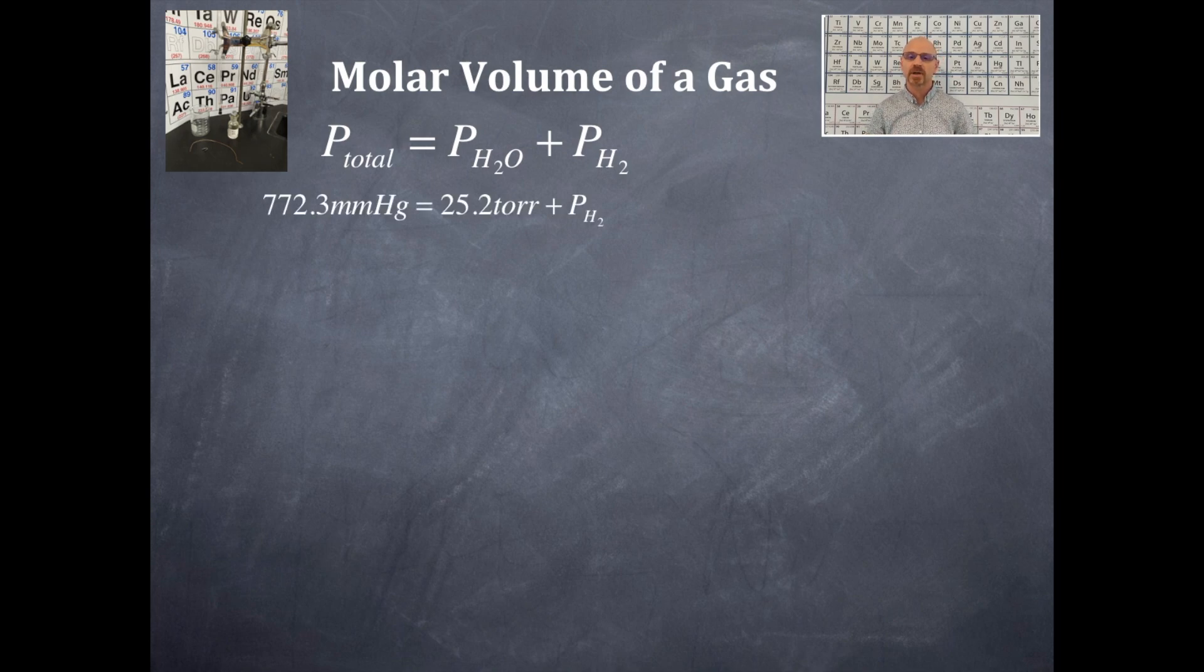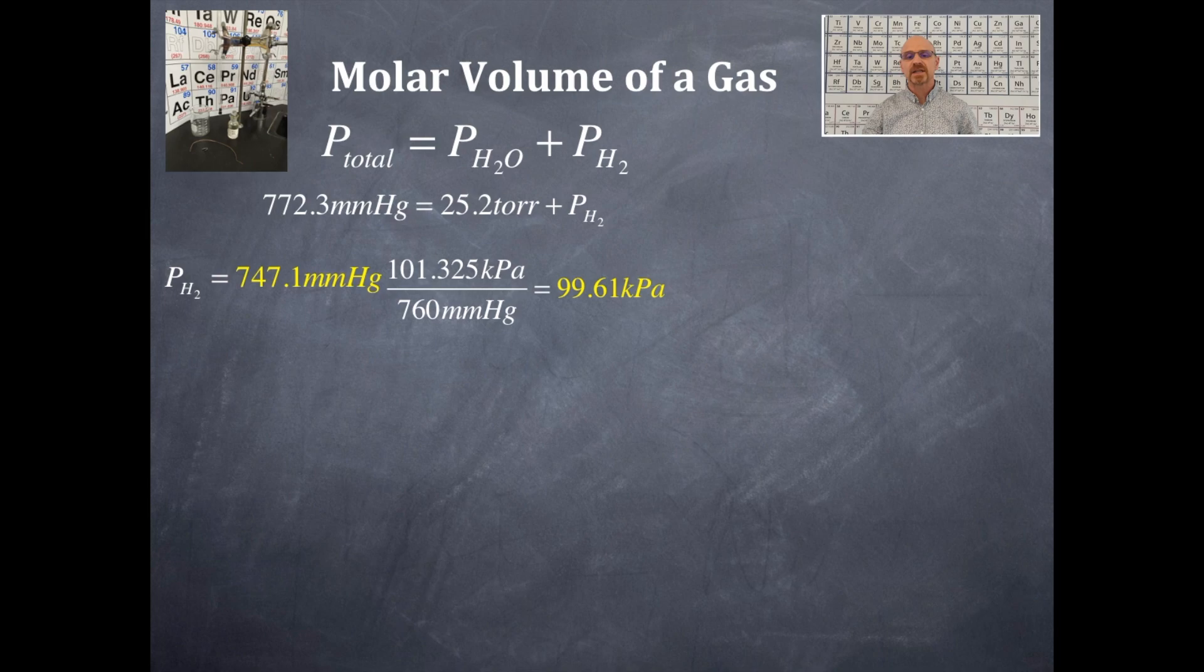And then you solve for the partial pressure of the hydrogen gas, and that is right here. So I've taken the partial pressure of the water vapor, 25.2 torr, and then the total pressure, which was measured in millimeters of mercury, at 772.3 millimeters of mercury. Now, I'm hoping that you remember that millimeters of mercury and torr are actually the same. That means one millimeter of mercury equals one torr. So we can actually subtract these to get the partial pressure of hydrogen in millimeters of mercury. Now, I'm going to convert this millimeters of mercury into another set of units. And those other sets of units that I'm going to use are kilopascals.